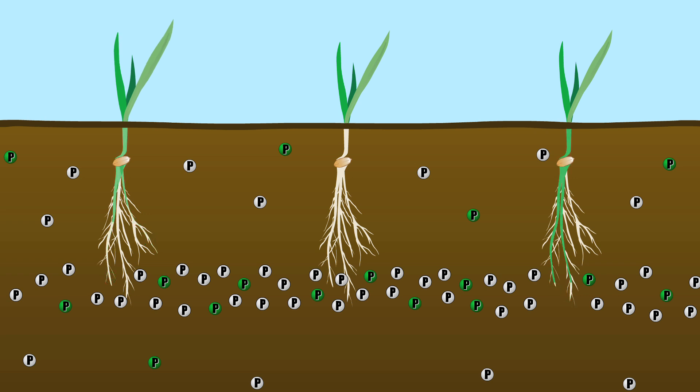Plants on the right and left have roots that grew long enough and in the right direction to access the available phosphate, while the plant in the middle did not.